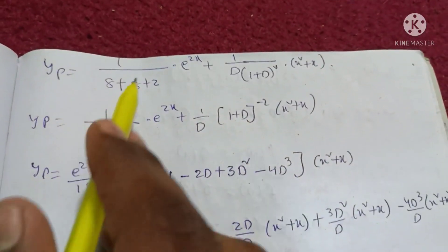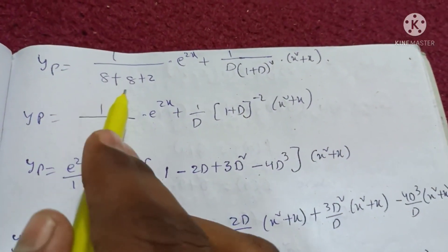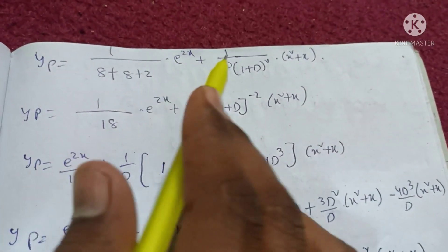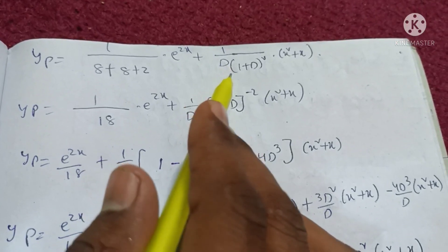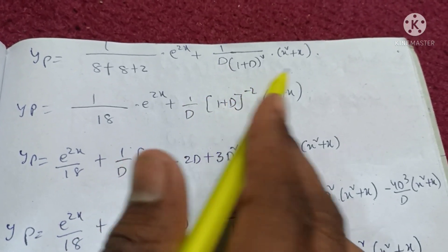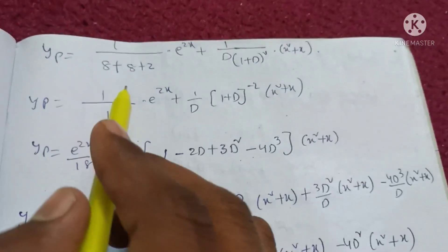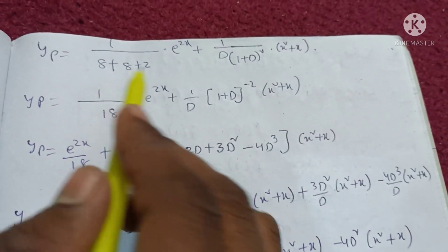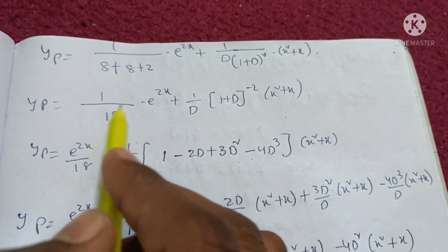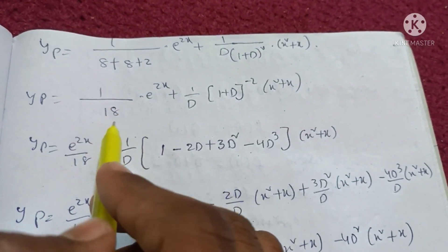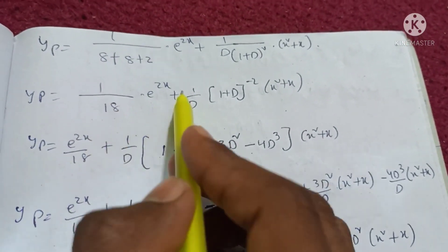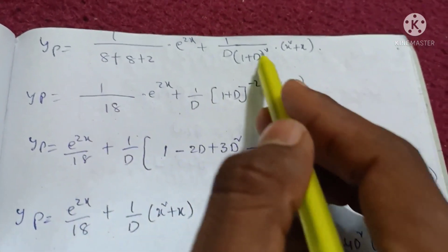For the e^(2x) term, use the exponential shift formula: substitute D = 2. We get 1/(2³ + 2·2² + 2) = 1/(8 + 8 + 2) = 1/18. So the first part is e^(2x)/18.